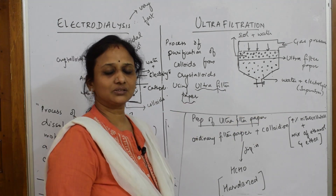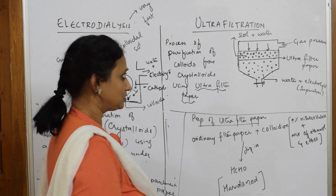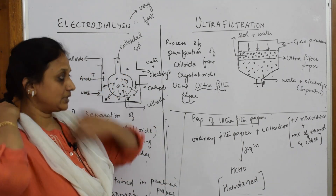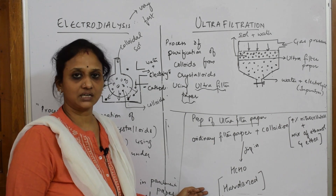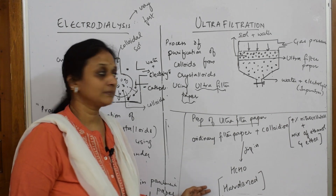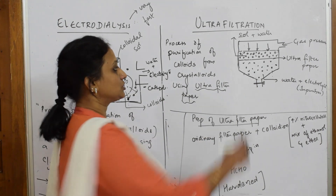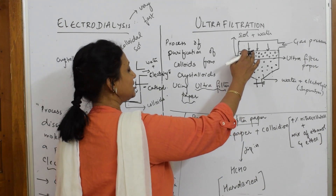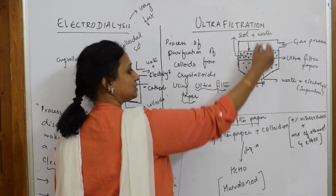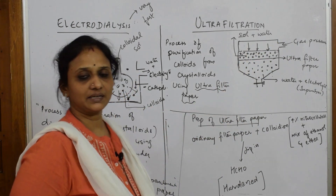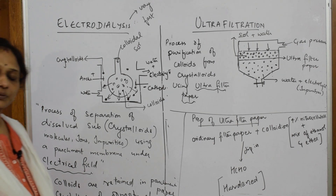The impurities are of true solution size particles and occupy the lower compartment, while the sol is retained in the upper compartment — they are separated. When writing your answer for ultrafiltration, write the definition, show the preparation of ultrafilter paper, draw the construction diagram, show where colloids and crystalloids are retained, and mention that gas pressure is applied to speed up the process.